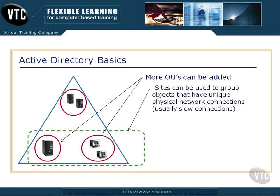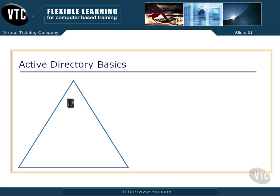I can also use Sites. A site allows me to group objects independent of the domain or the OUs. This usually connects down to the physical network underlying the logical Active Directory design. I can use that to group together computers that share slow network connections so that they will try to communicate with each other first before going outside the site, because they'd otherwise have to reach over slow connections to other locations.